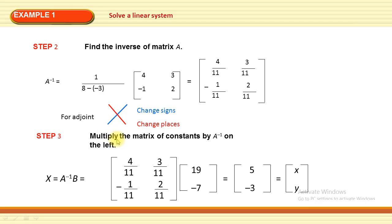In step 3, multiply the constant matrix B by A⁻¹ on the left to find x = A⁻¹B. Multiplying the inverse matrix by matrix B, we obtain [5; -3] after simplification. So the solution is x = 5 and y = -3.